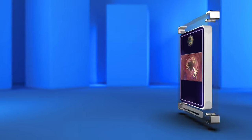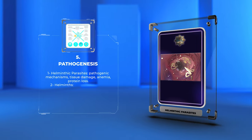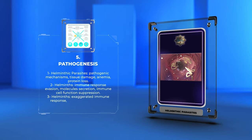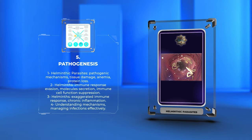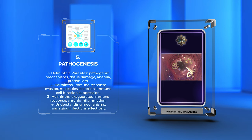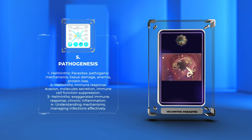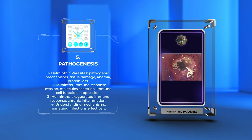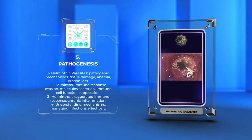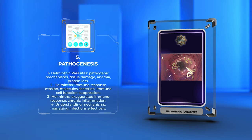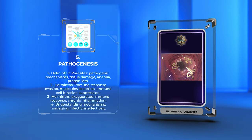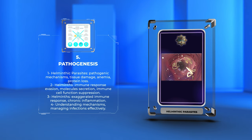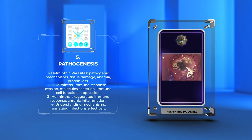In this section we explore the pathogenic mechanisms used by helminthic parasites. Helminths cause tissue damage through feeding, leading to conditions such as anemia and protein loss. They also evade the immune response by secreting molecules that suppress immune cell function. Additionally, helminths can induce an exaggerated immune response, causing chronic inflammation. Understanding these mechanisms is crucial for managing these infections effectively.